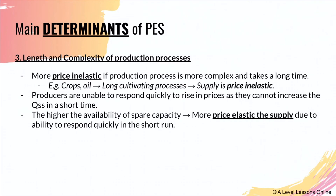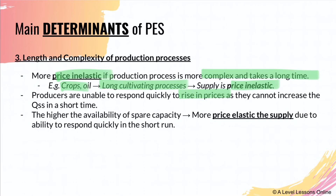The third determinant is the length and complexity of production processes. A complex, lengthy process tends to make supply more price inelastic. For example, crops take a very long time to cultivate — you cannot force a carrot to grow overnight. Similarly, wine is price inelastic because it takes time to produce. Producers cannot respond quickly to higher prices in the short run. Greater spare capacity, however, makes supply more price elastic, as firms can increase output more readily.